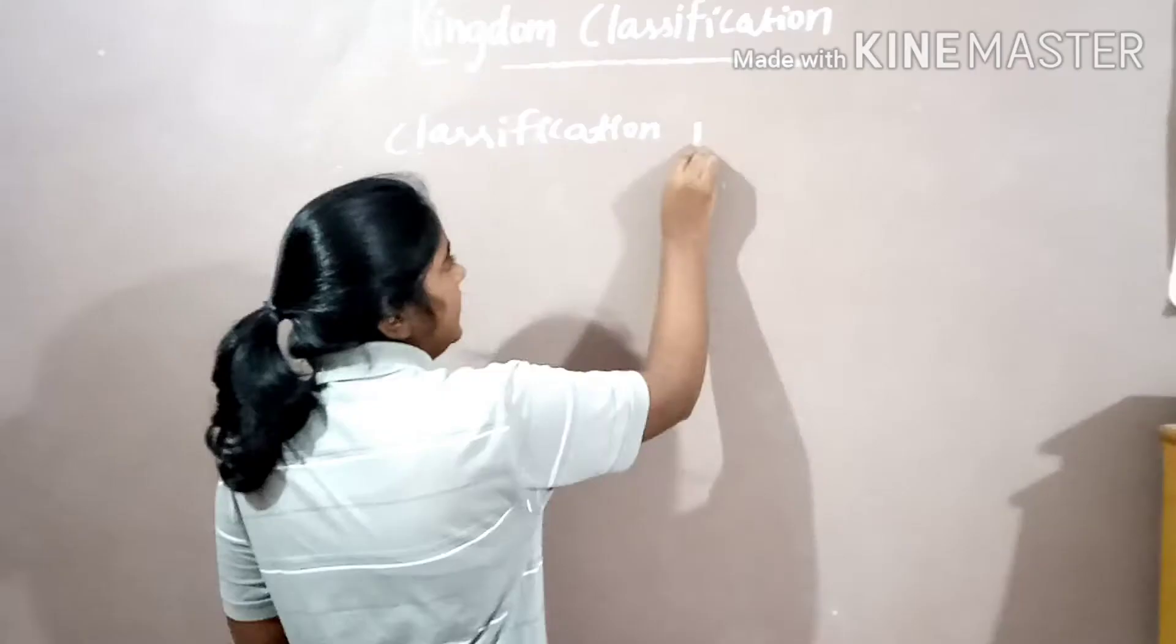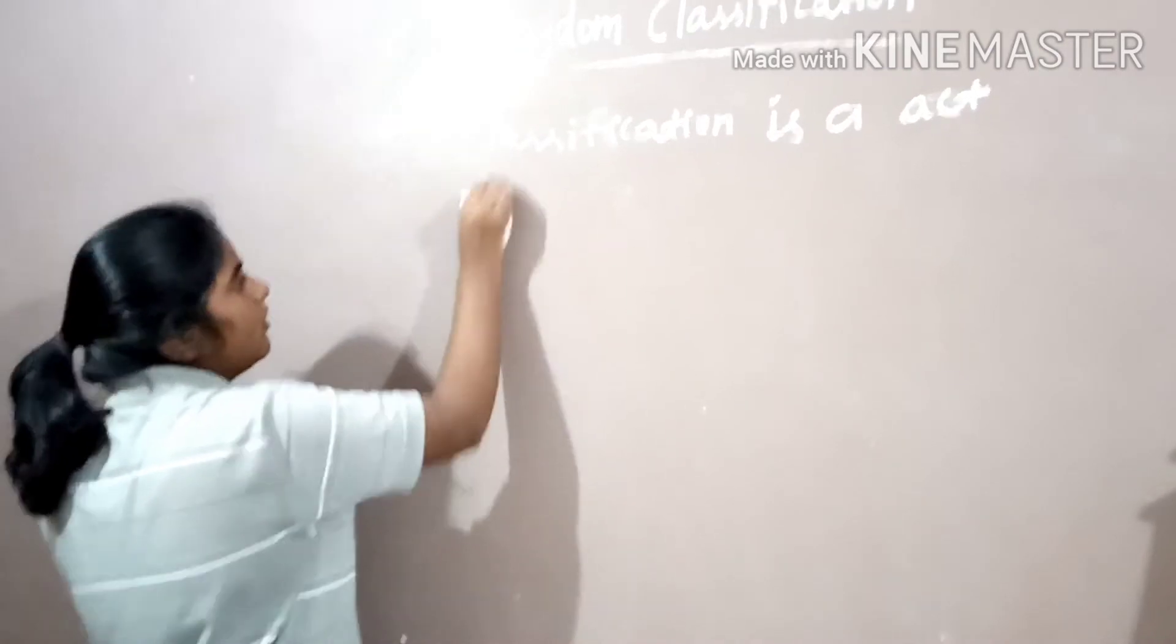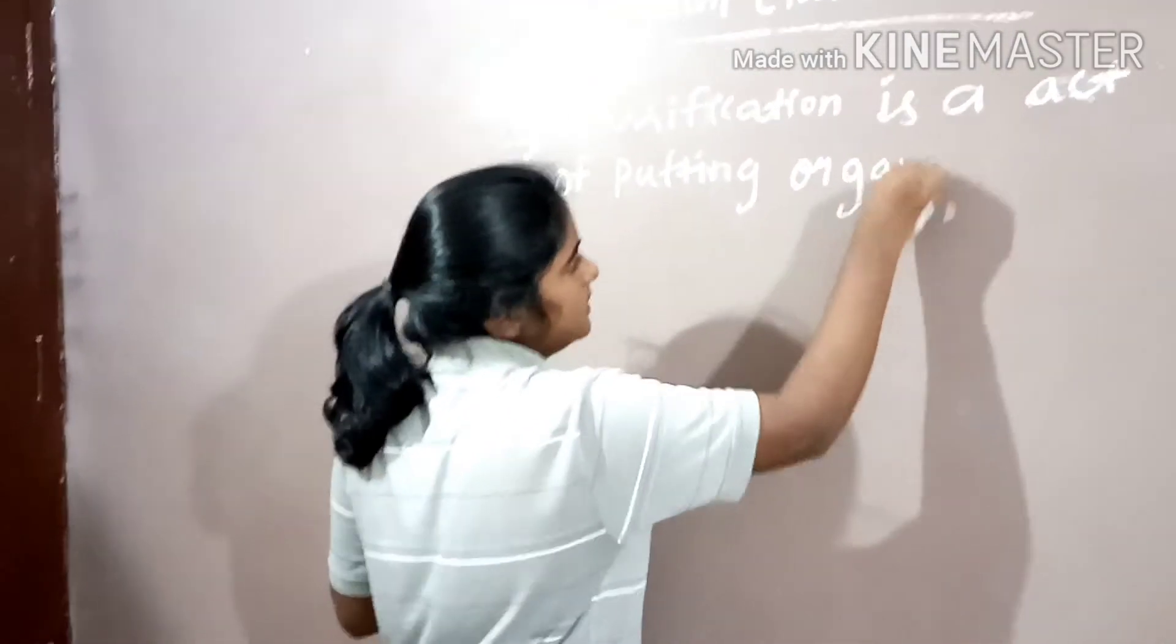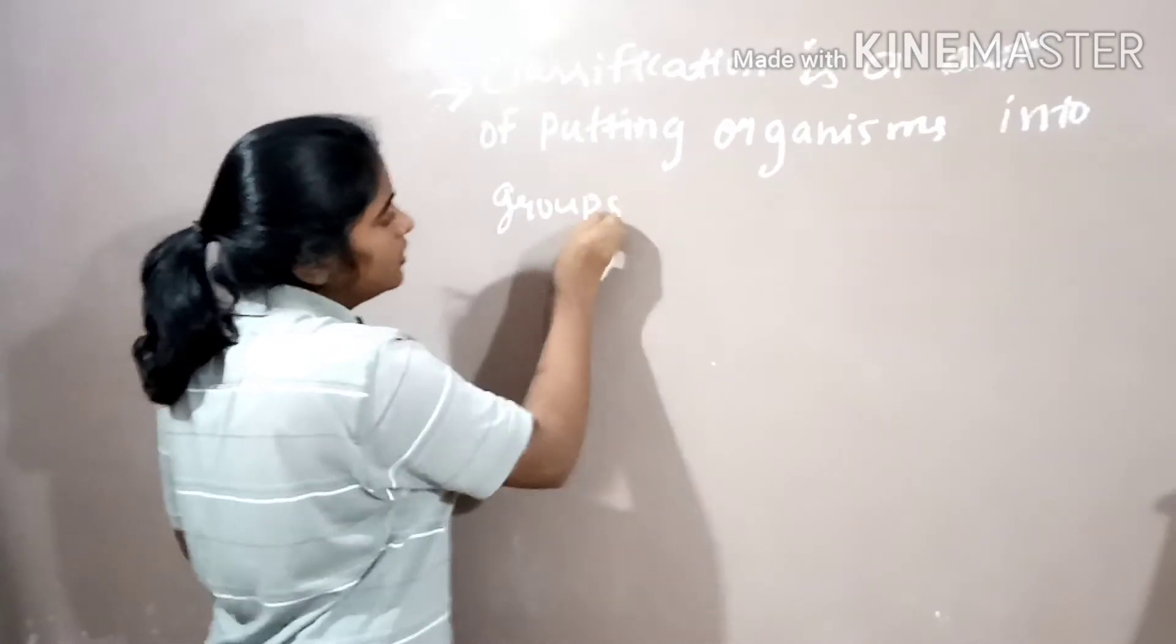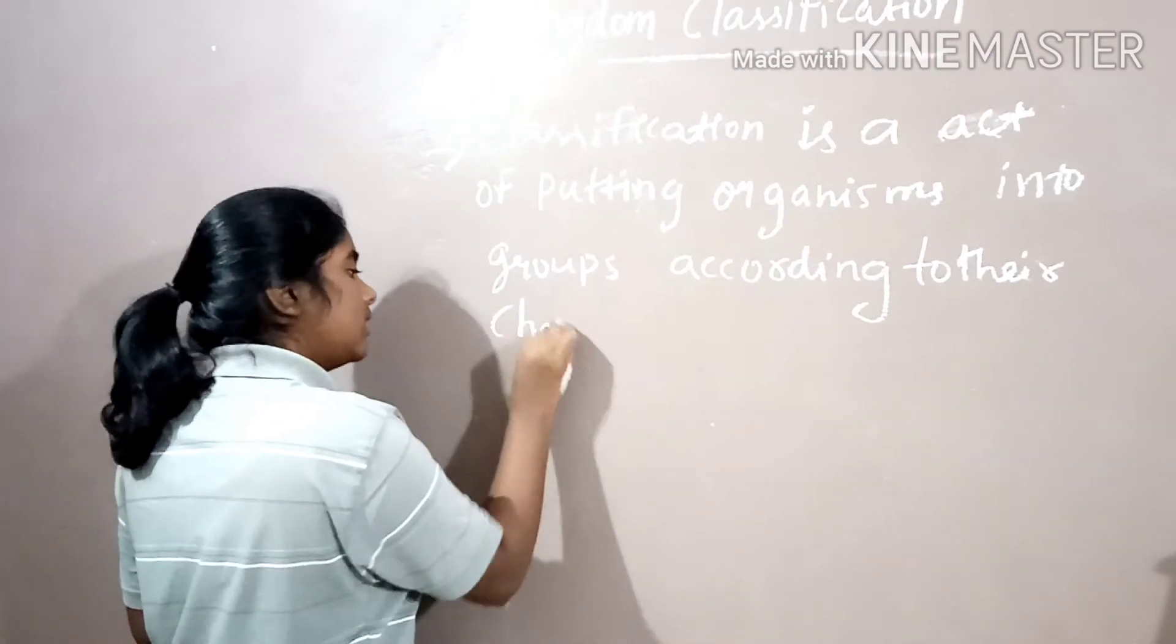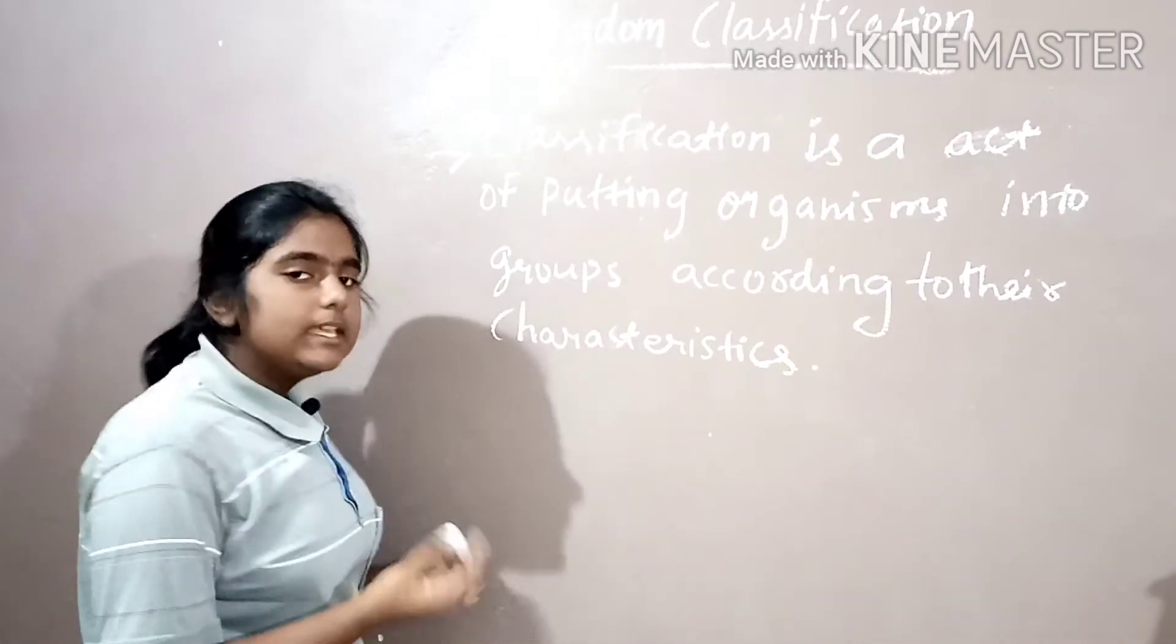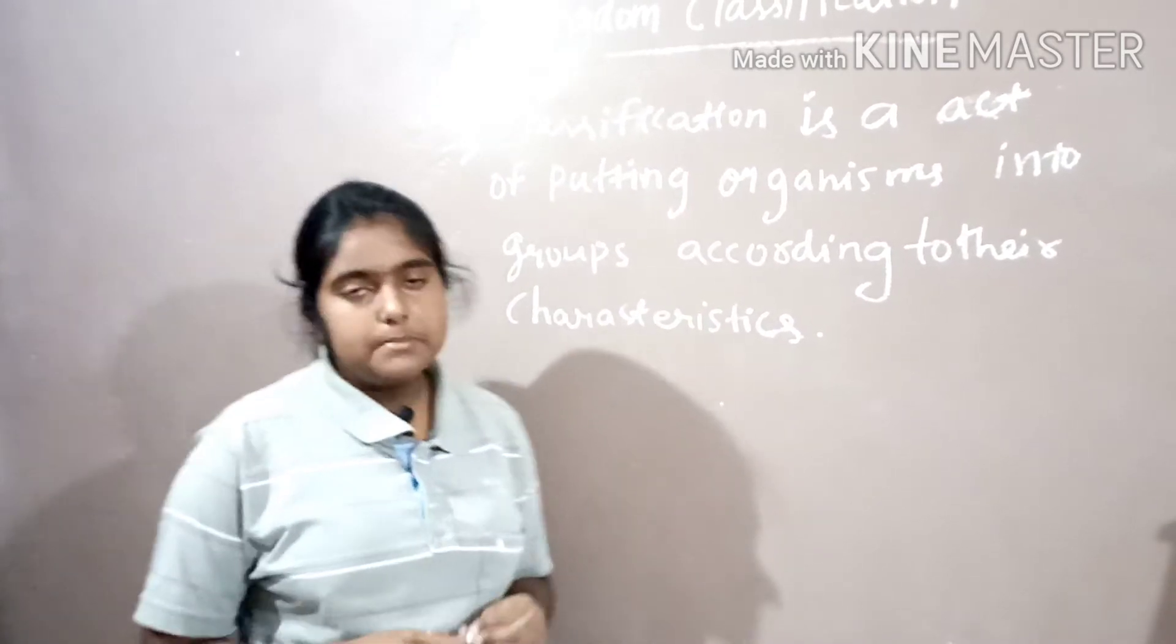Now what is classification? Classification is an act of putting organisms into groups according to their characteristics, or based on their characteristics.